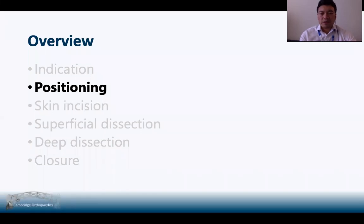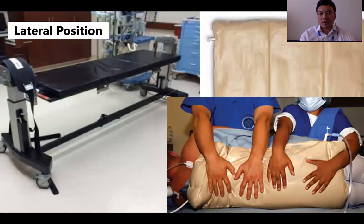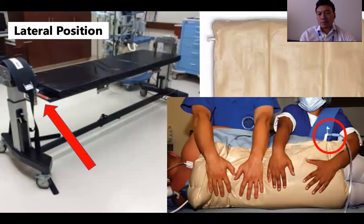In terms of patient positioning, the patient is in a lateral position using a Jackson table and a bean bag. It's important to keep the bean bag attached to suction throughout the whole procedure, and I use a seat belt or strap over the patient to ensure he's firmly secured to the table.